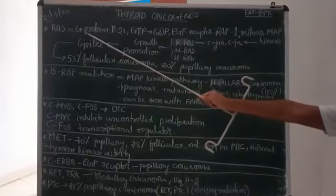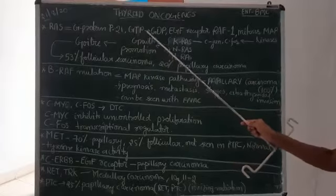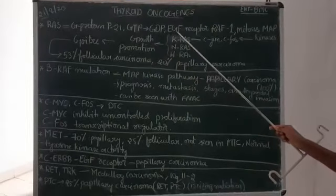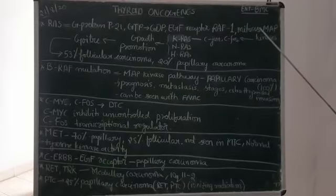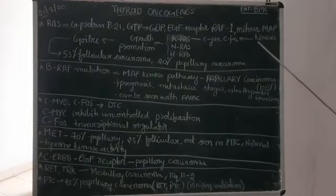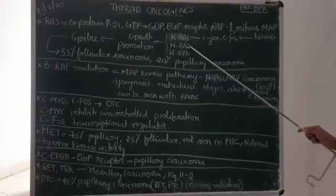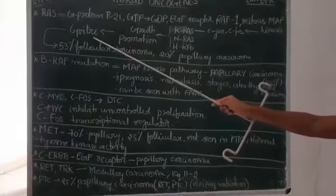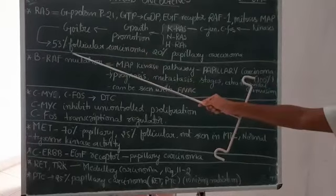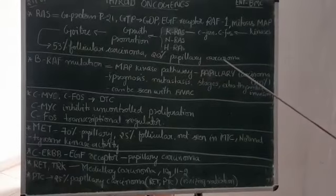RAS-G, a G-protein, leads to GTP being converted to GDP and is related to EGF-receptor RAF-1, which leads to mitosis and kinase activity related to C4 and CCHN. This leads to K-RAS, M-RAS, and H-RAS, which promote growth and goiter formation. This is seen in 53% of follicular carcinoma and 20% of papillary carcinoma.